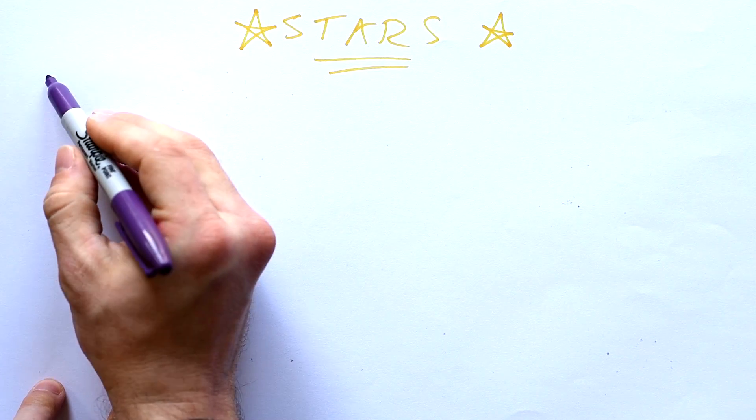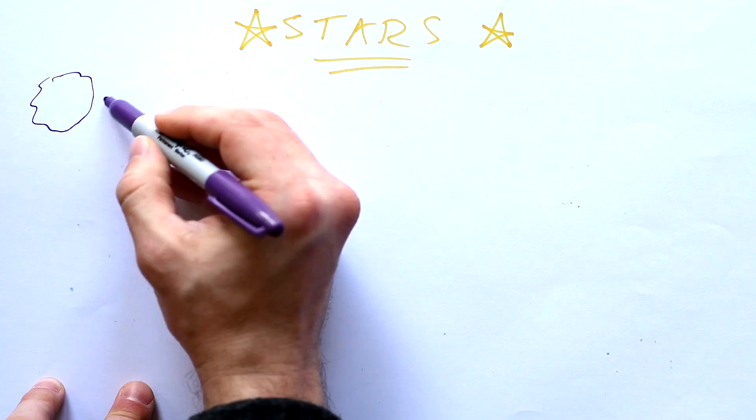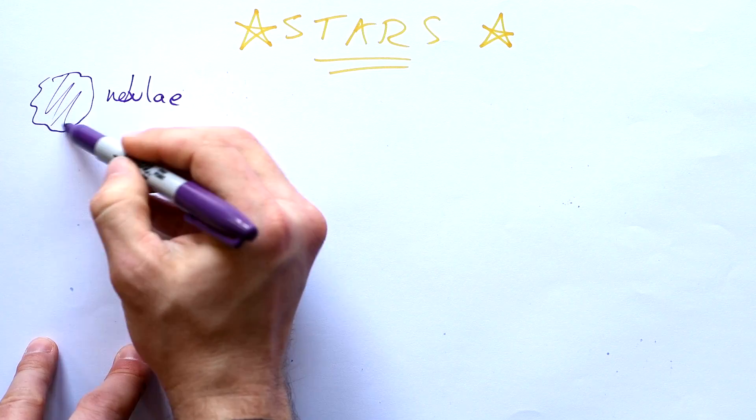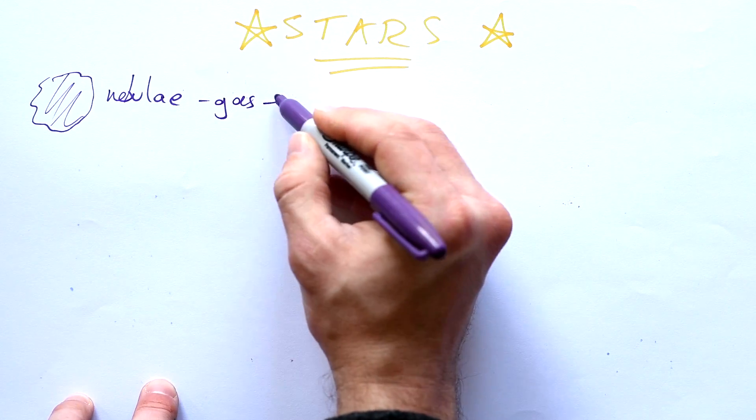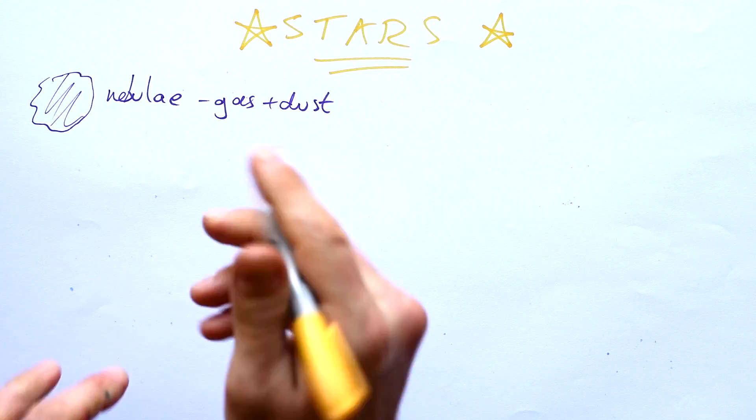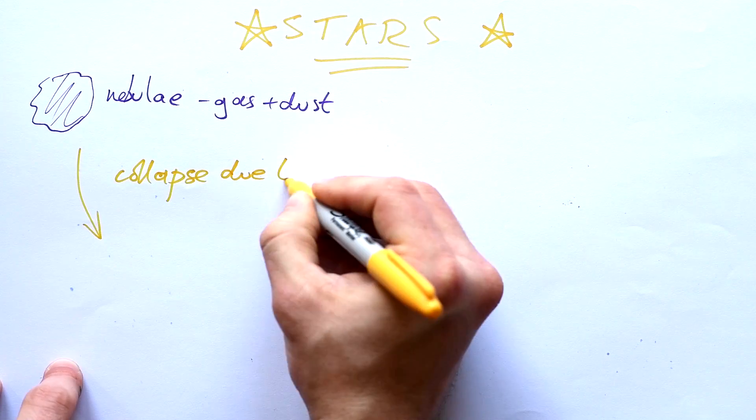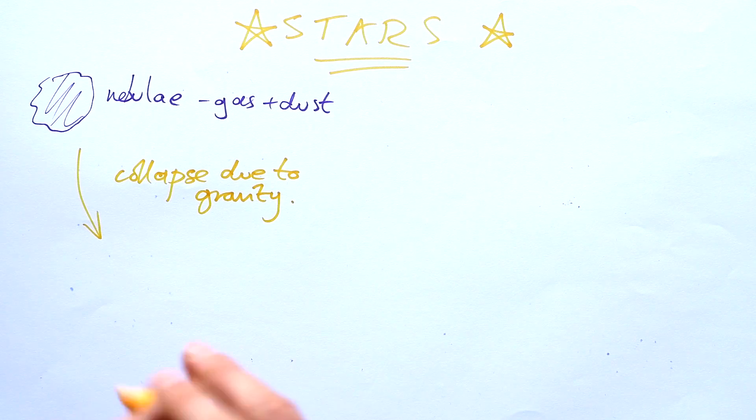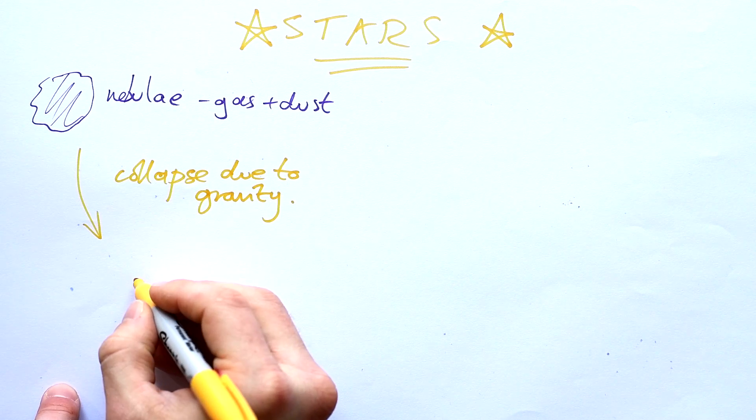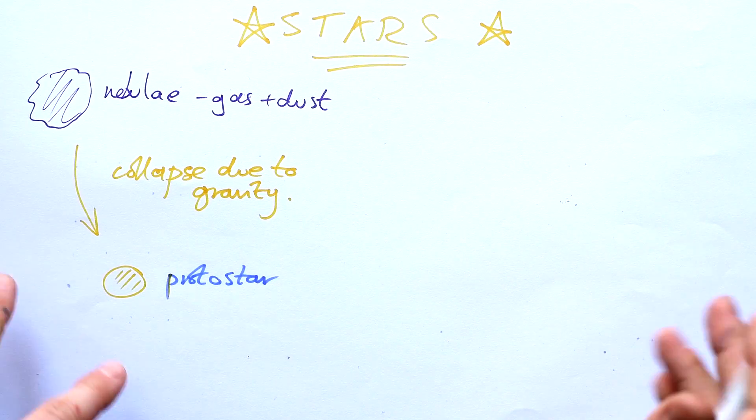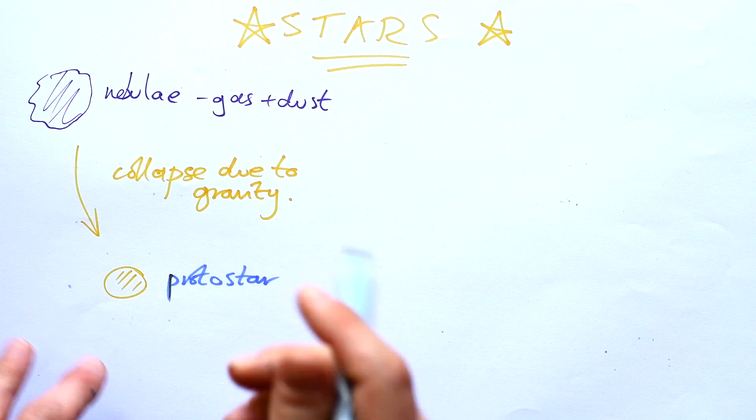So where do stars come from? Well, we think that they come from nebulae. They're just big clouds of gas and dust, and they collapse in on themselves. This is due to gravity. Even bits of dust and gas have gravity. They turn into protostars. Proto means basically first, like prototype. It's a baby star.